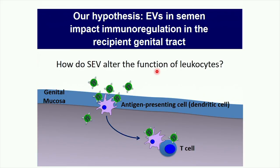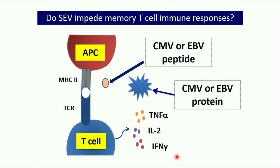I hypothesized that EVs in semen impact immunoregulation in the recipient genital tract, particularly affecting memory immune responses relevant to anti-HIV vaccines. I focused on antigen-presenting cells, specifically dendritic cells of the genital mucosa—Langerhans cells in the epithelial layer—and T cells that reside more deeply. To investigate whether SEV impede memory T cell responses, we used model antigens CMV and EBV, since most people have memory T cell responses to these viruses. We stimulated PBMCs from typical blood donors with these antigens and asked what happens when SEV are added.